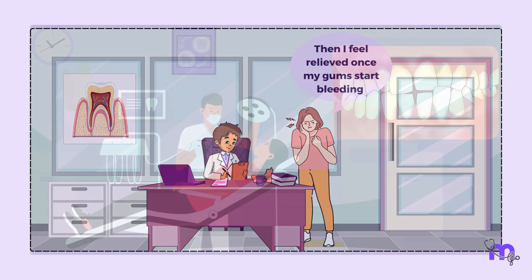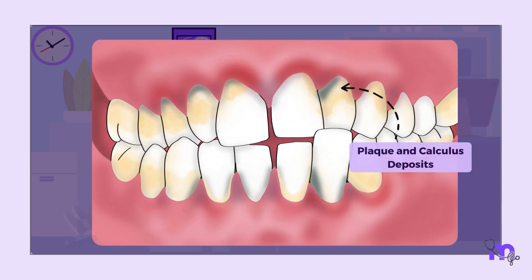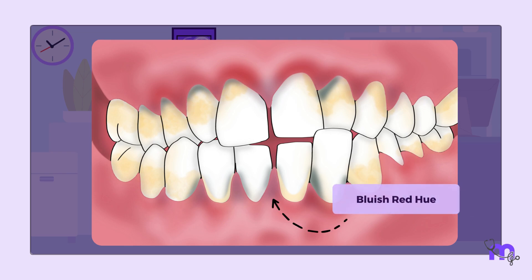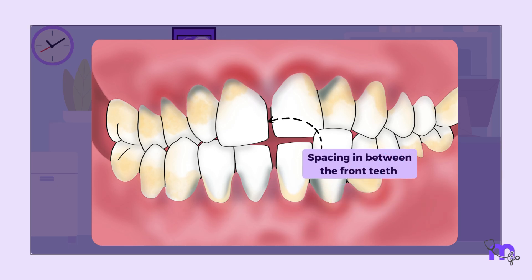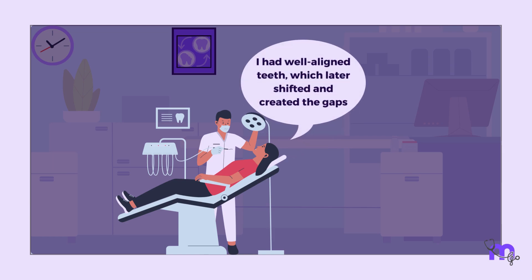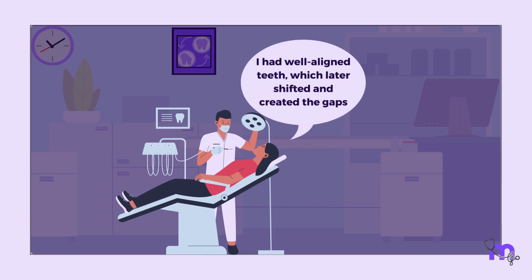On intraoral examination, I noticed plaque and calculus deposits, halitosis, a generalized bluish-red hue on the marginal and attached gingiva, and spacing in between her front teeth. I asked her about the gaps. She told me that she had well-aligned teeth, which later shifted and created the gaps.